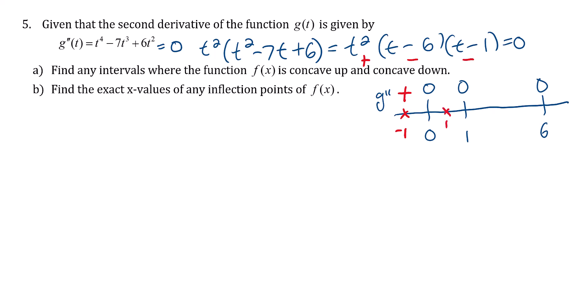Now let's put in 1 half. That first term, the t squared, is always positive. If I put a half in for t minus 6, that'll be negative. A half for t minus 1, that'll also be negative. So we've got positive times negative times negative again, which will be positive.